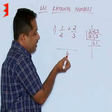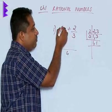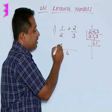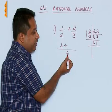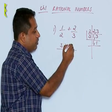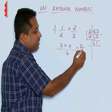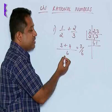Now, we see how many times 2 goes in 6. 2 goes 3 times and that number has to be multiplied by the numerator. 3 into 1, we are going to get 3 plus the number here is 3. We will see how many times it is going in 6. 3 goes 2 times. 2 multiplied by 2, we are going to get 4. 3 and 4 can now be added, we are going to get 7 upon 6. This is the method of addition of rational numbers.